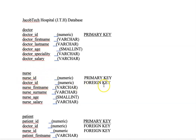There is also the nurse first name and the nurse surname, which are both varying characters. There's the nurse age, which is a small integer, and the nurse salary, which is also a varying character.